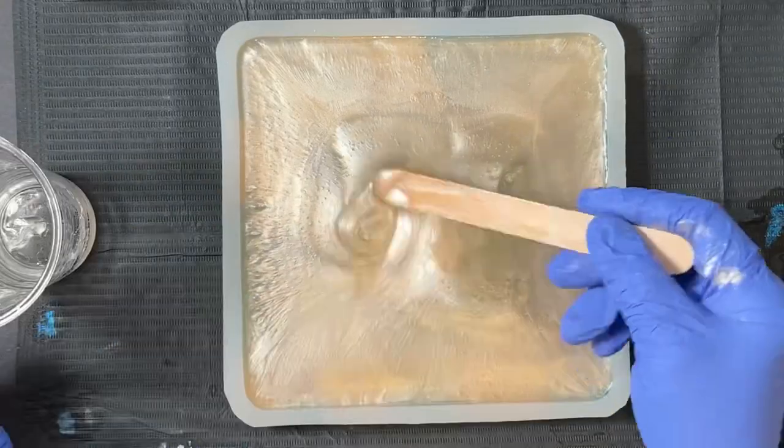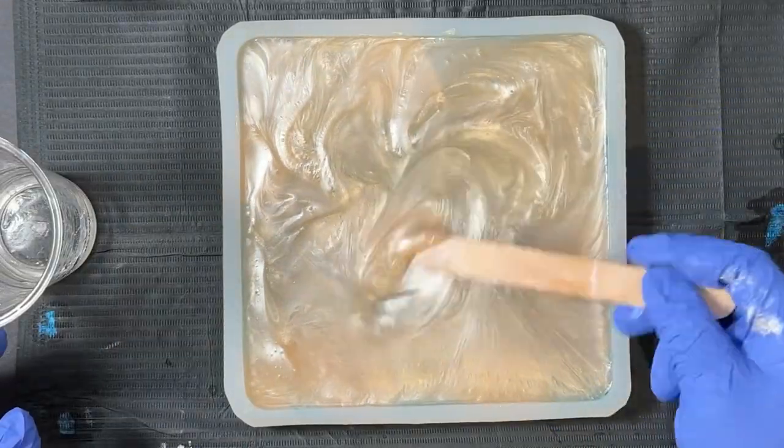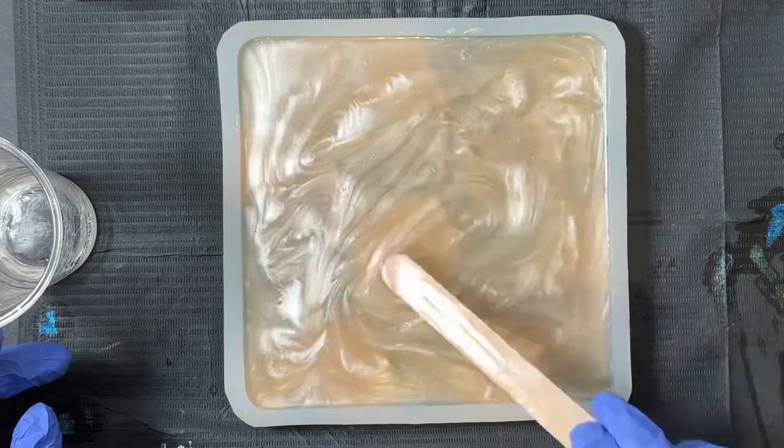And then I will go over that with the popsicle stick and swirl that just like I did with each of the individual cavities. Spritz it with some isopropyl alcohol and allowed to cure.